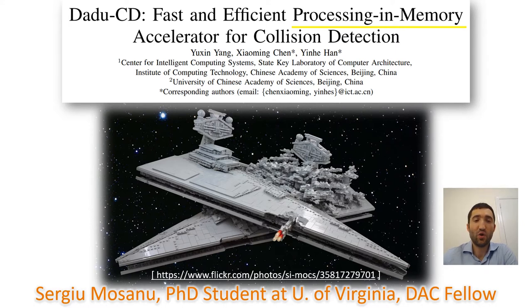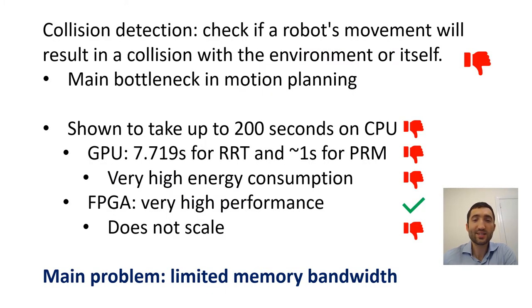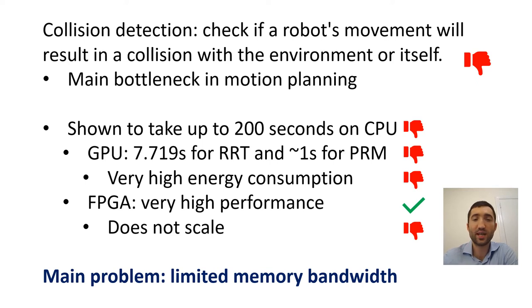Collision of space destroyers, manufacturing robots, or self-driving cars can be an expensive act, so it is a useful and important problem to look at. The task is to check if a robot's movement will result in a collision with the environment or with itself, and it is part of the motion planning problem and an omnipresent calculation task in industry, gaming, and so on.